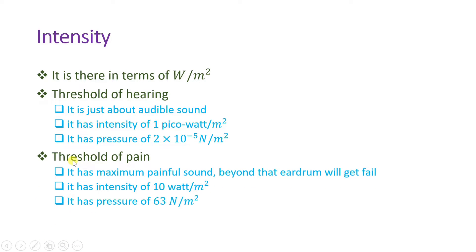The threshold of pain is the maximum painful sound — beyond that, our eardrums will get damaged. Its intensity is 10 watts per meter square and it has a pressure of 63 Newton per meter square. So from threshold of hearing to threshold of pain is the range in which humans can interact with sound.